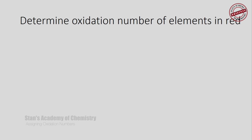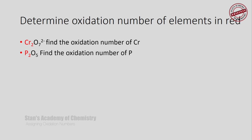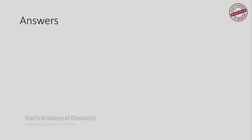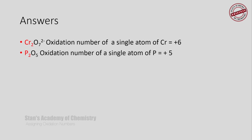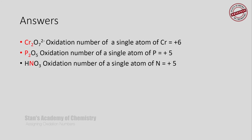Here are some practice examples: determine the oxidation number of chromium in dichromate, phosphorus in phosphorus pentoxide, and nitrogen in nitric acid. Check your answers on the next slide — pause the video for now. That's it for now. This is how you assign oxidation numbers and determine the oxidation numbers of atoms in ions or in neutral molecules. Thank you, and have a great day.